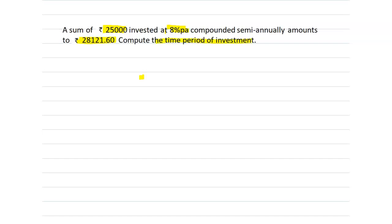We have to find the time period, and it is calculated compounded semi-annually, that is six months once. We are calculating the rate of interest. Here we will write the given things.